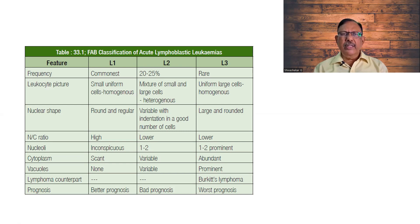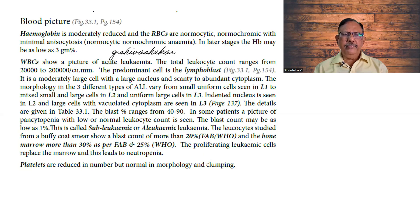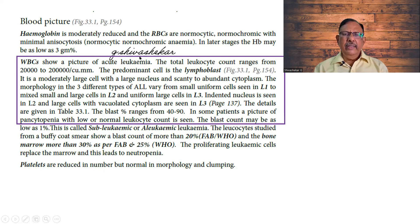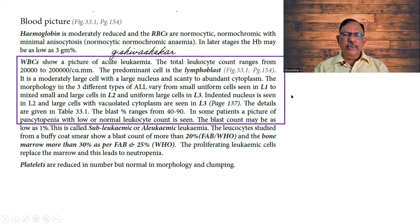There are three types and you shall mention the differences between the three. The WBC count will be increased from 20,000 to even up to two lakhs. There is a lymphoblast with a large nucleus and the nuclear cytoplasmic ratio is four to five. There are three types: L1, L2, and L3.